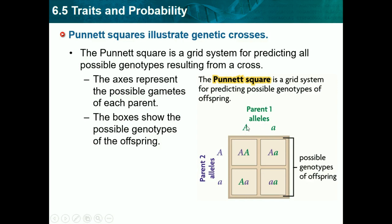Parent 1 here has capital A and lowercase a, and parent 2 has capital A and lowercase a. So that means in both of these parents they have the dominant trait — if it was the blonde hair case, they would both have black hair because black hair is dominant. To do the Punnett square, you take the first allele from the first parent, put it down, and the first from the second parent put it there, and you just cross over all the letters.